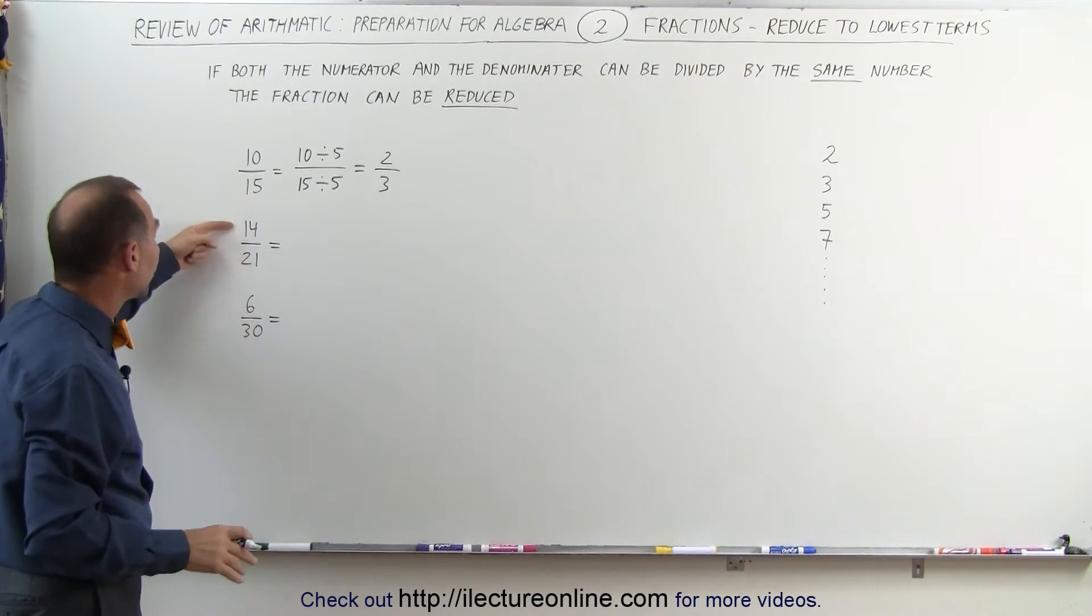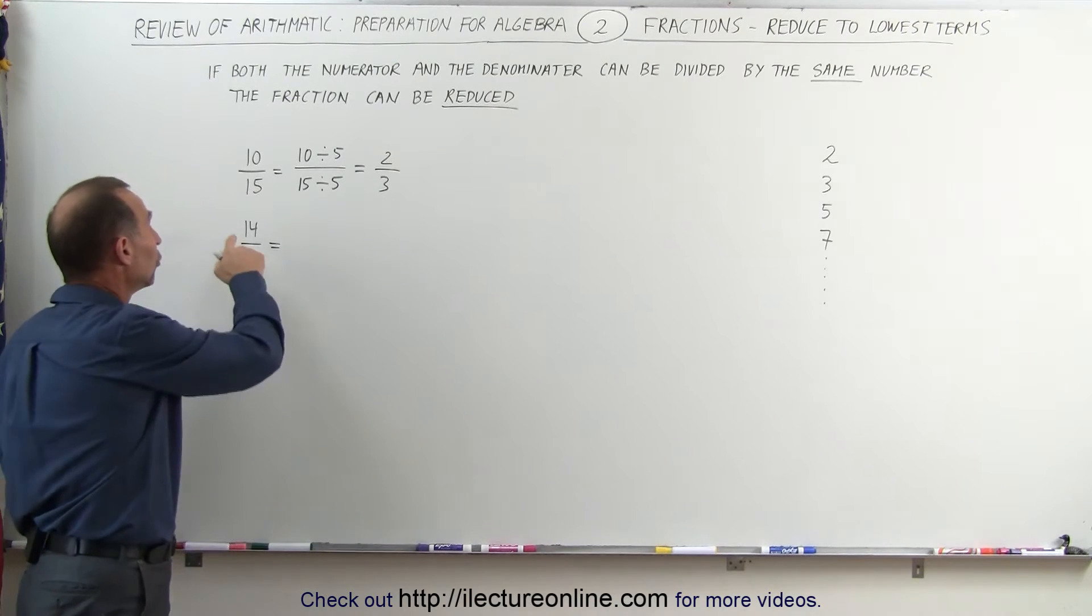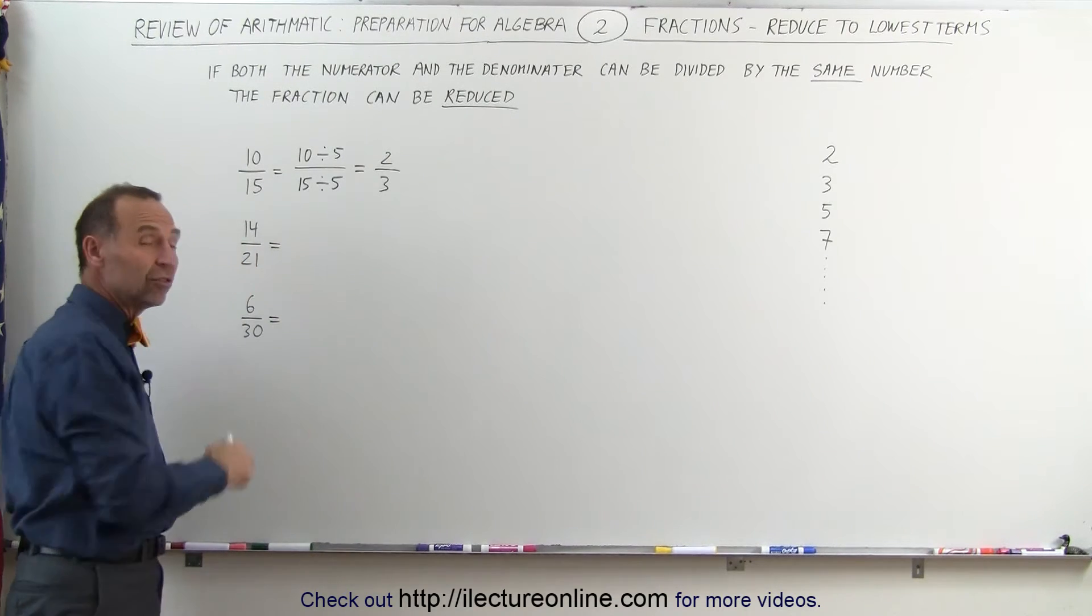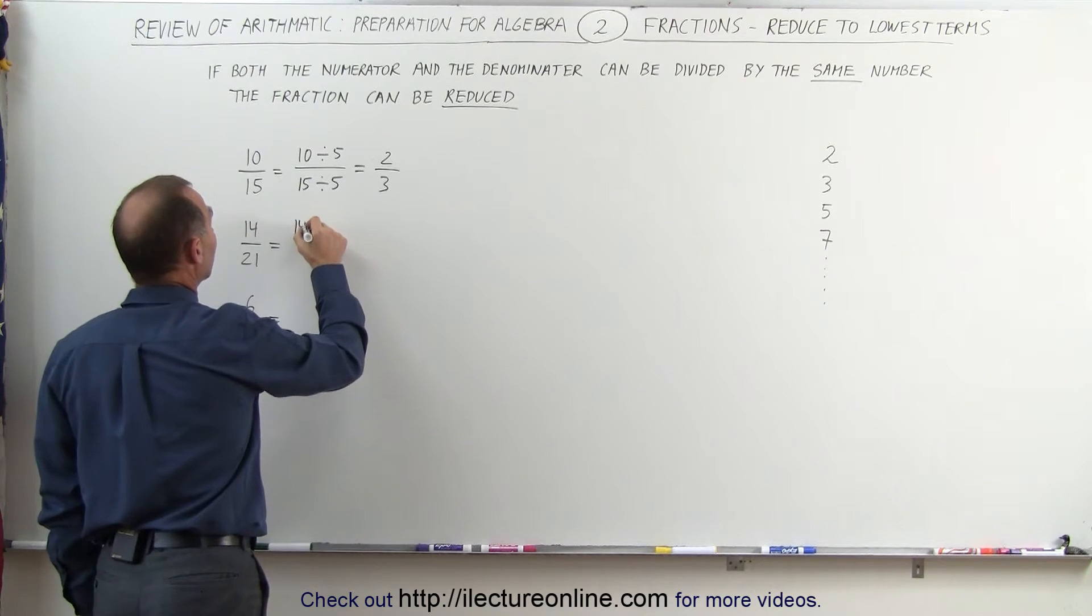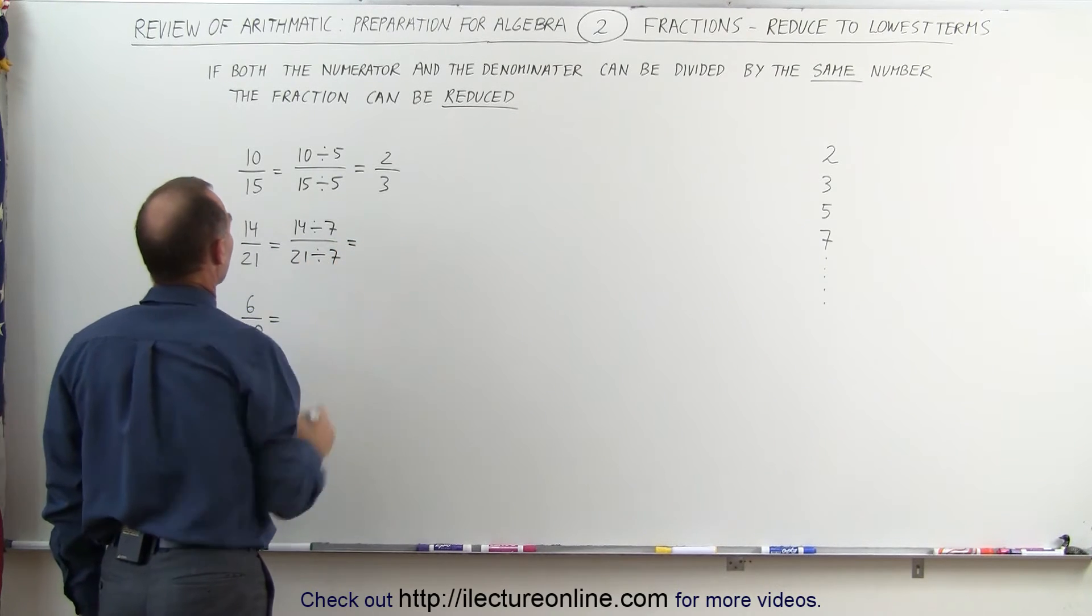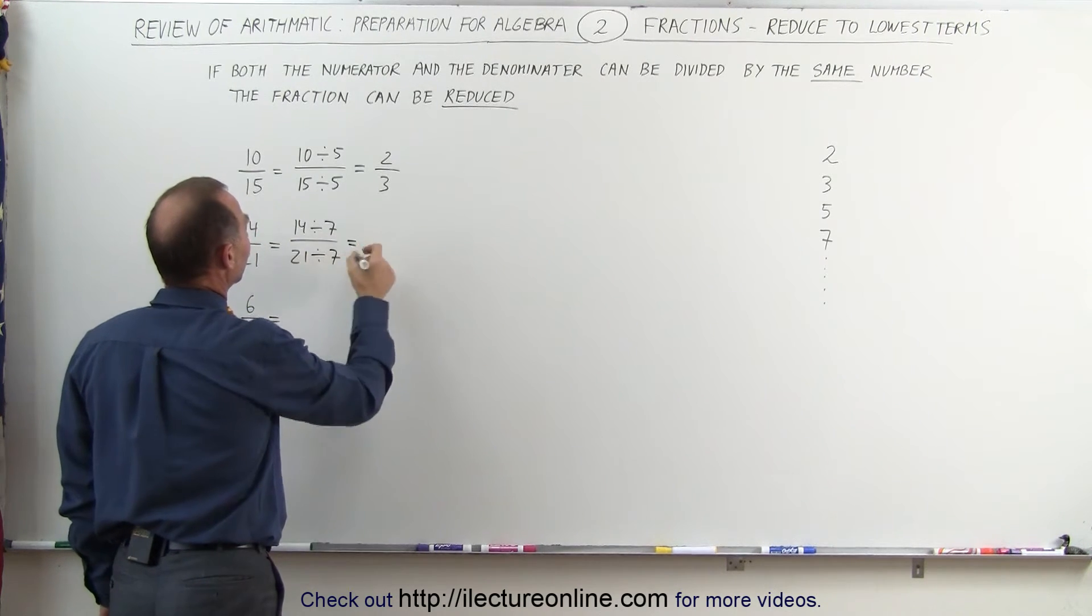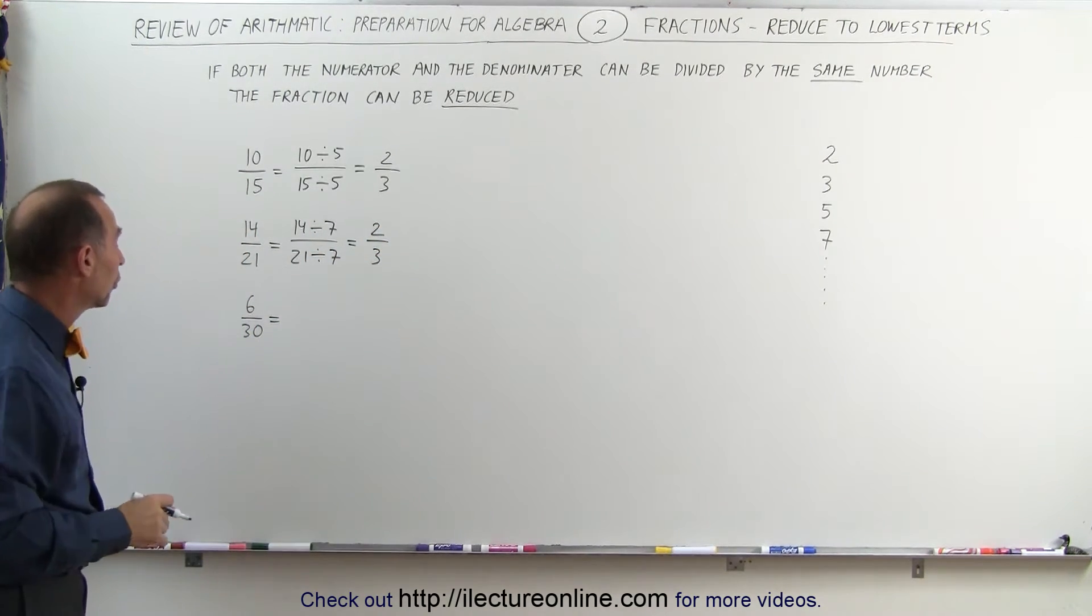The next example, 14 divided by 21, we need to recognize that 14 is 2 times 7, and 21 is 3 times 7, which means we can take 14 and divide it by 7, and we can take 21 and divide it by 7. 14 divided by 7 is 2, 21 divided by 7 is 3. That fraction also reduces to two-thirds.